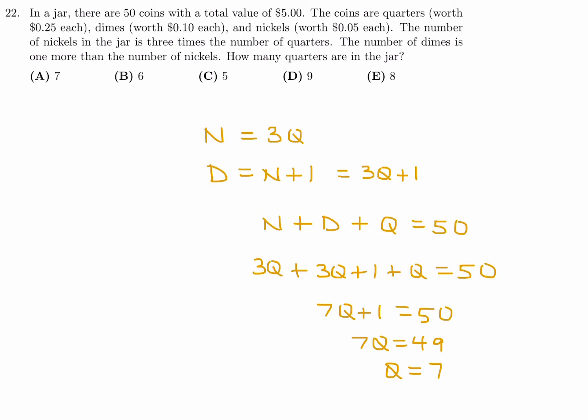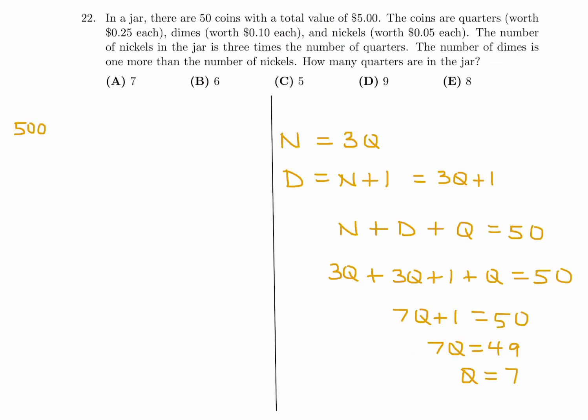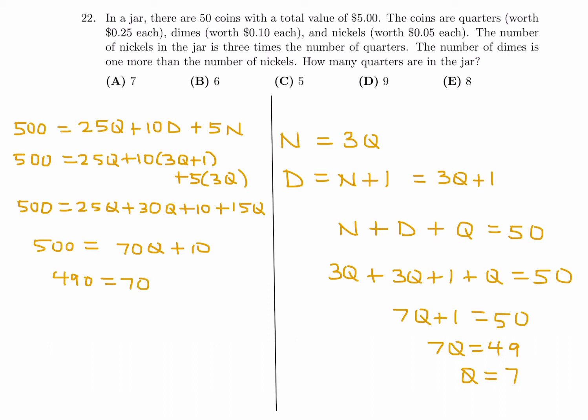I got the answer even without talking about the value. I was going to go into that hole. You know what? I'm still going to do it. 500 is equal to 25q plus 10d plus 5n. So 500 is equal to 25q, d is 3q plus 1. And n is equal to 3q. So multiplying this out, we get 500 is equal to 25q plus 30q plus 10 plus 15q. So that is 40 plus 70q plus 10 is equal to 500. 490 is equal to 70q. And therefore q is equal to 7. So as you can see, either way, the answer is 7.